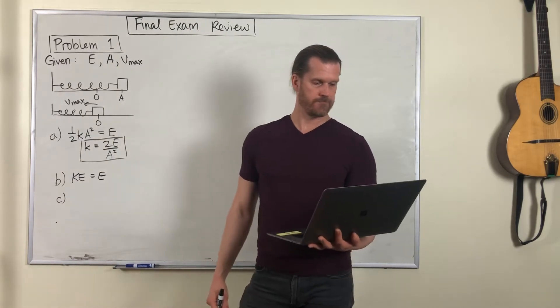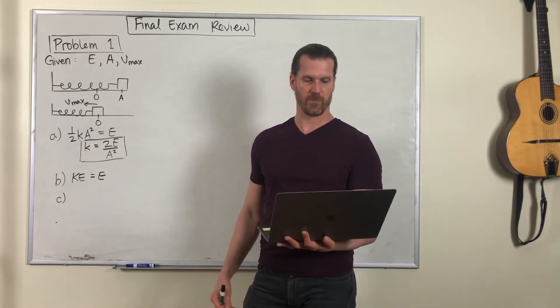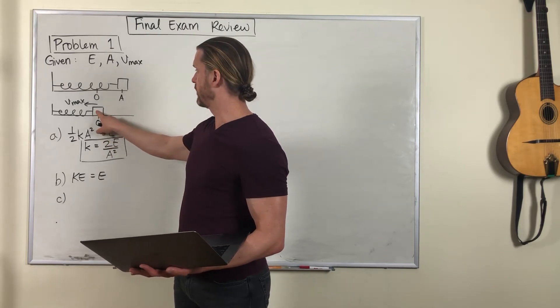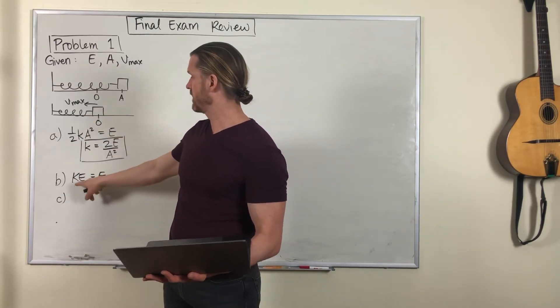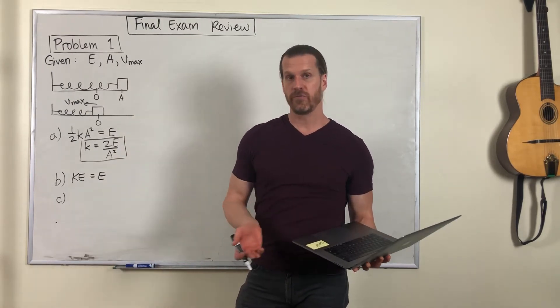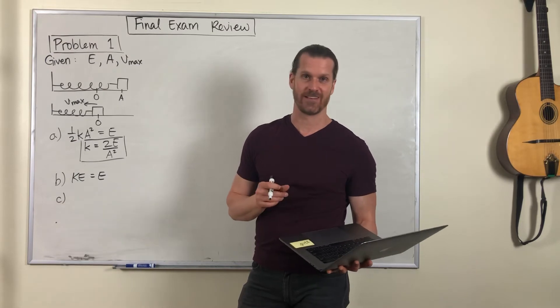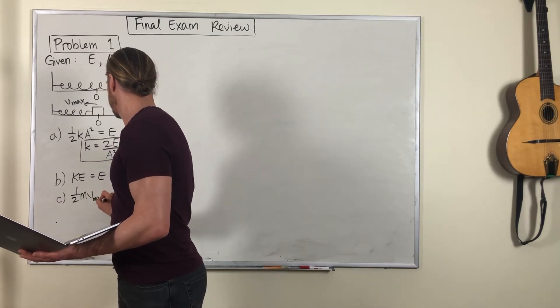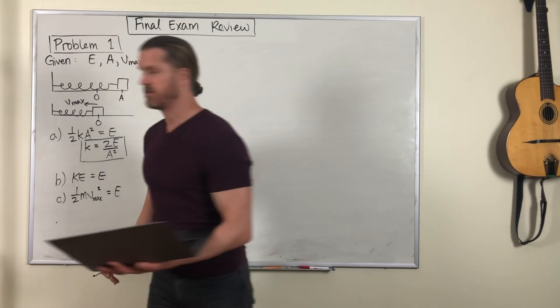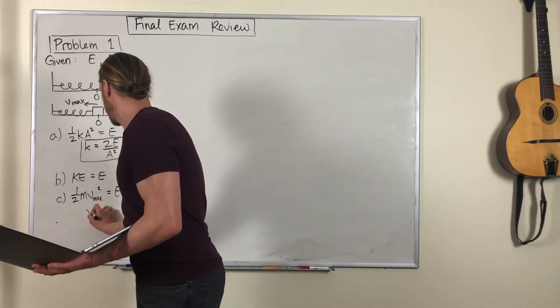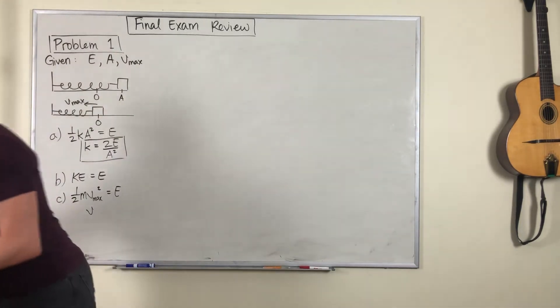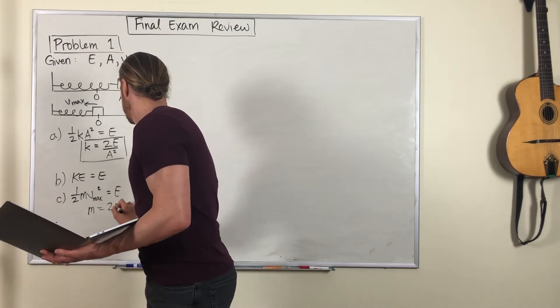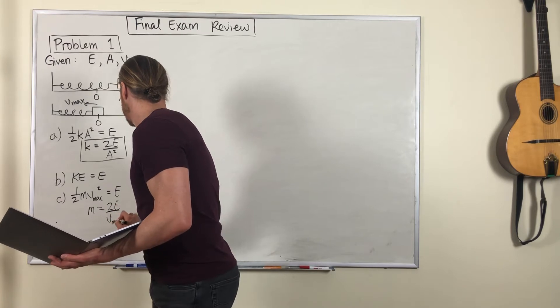Part C. If the maximum speed of the block is some number, what is the mass of the block? Well, again, we know this fact that at equilibrium, that kinetic energy equals the total energy. And we also know that the maximum speed occurs at that equilibrium point. So you can say one half m v max squared equals that total energy value and solve for m. So m is 2E over v max squared.